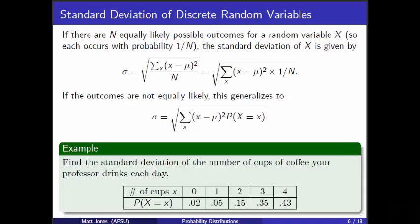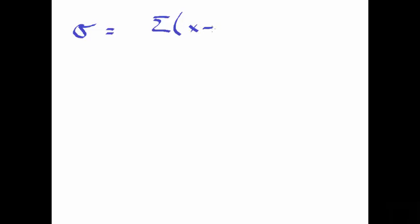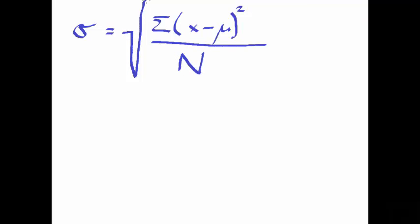We've already seen a formula for population standard deviation. We use a lowercase sigma for that. Essentially, you take the sum of all the squared deviations from the population mean, divide by n — the number of things in the population — and then take the square root. That's how you get the population standard deviation.